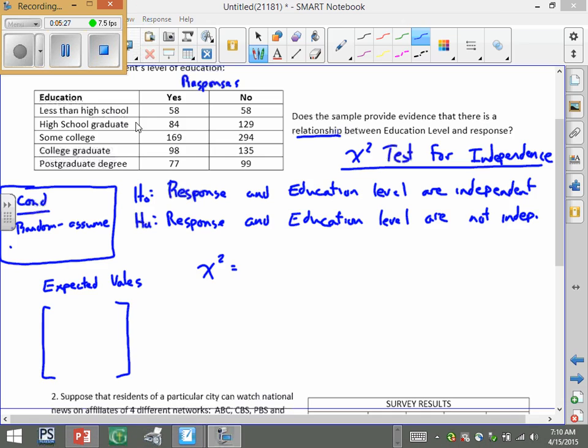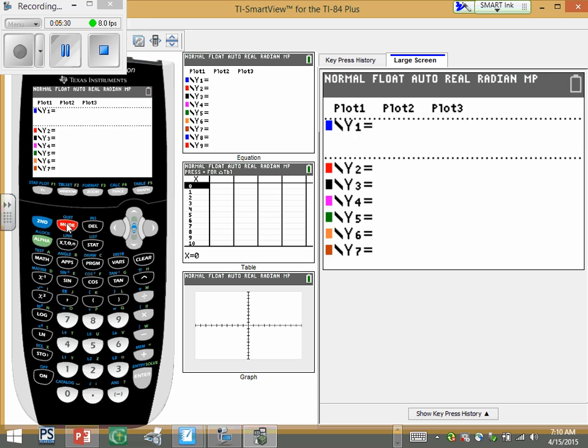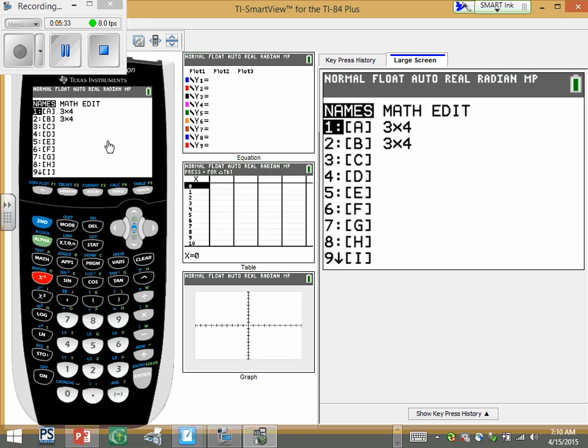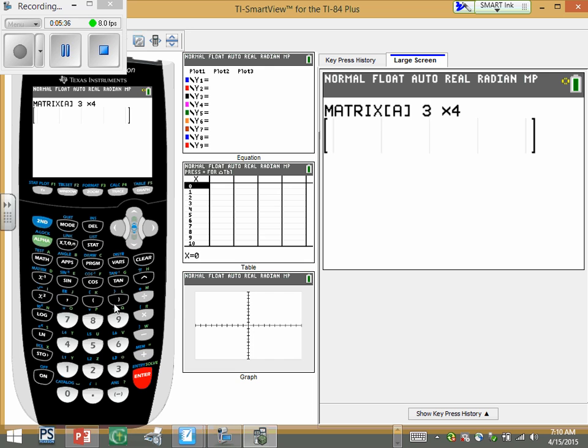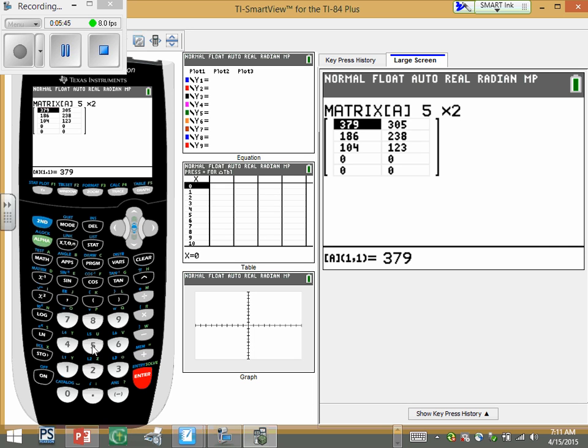So I've got my calculator open. So we'll go to matrix. So we're going to edit Matrix A. And this would be 5 by 2. And then just fill in the values. So 58, 58, 84, 129, 169, 294, 98, 135, 77. I'm going to have to go back up. Make sure you type stuff in the right way. All right. So we got our stuff into our matrix.